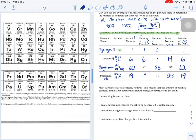So like I said before, most substances are electrically neutral. That means that the amount of positive particles, protons, equals the number of negative particles, the electrons. So if it's neutral, the number of protons equals the number of electrons.